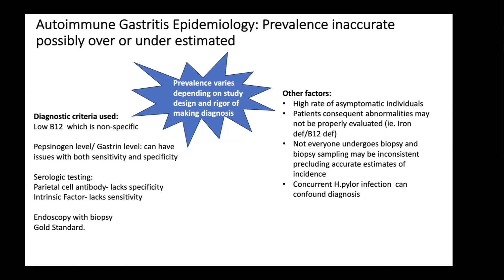In some studies, just a low B12 level was used to define autoimmune gastritis — this is very non-specific and likely overestimates prevalence. Other measures used were pepsinogen level and gastrin level, which both have issues with sensitivity and specificity. Parietal cell antibodies can occur in different disease types, so they lack specificity. Intrinsic factor antibodies are not found in many patients with autoimmune gastritis and therefore probably underestimate the diagnosis.